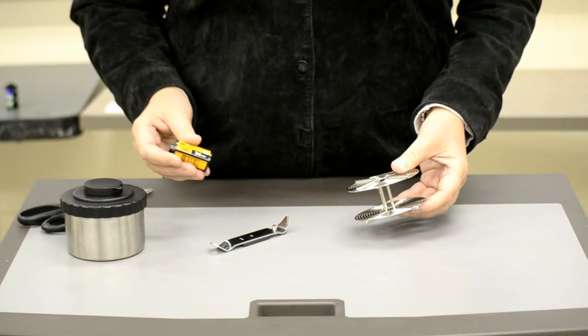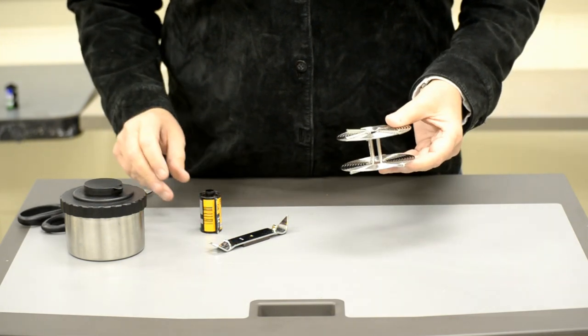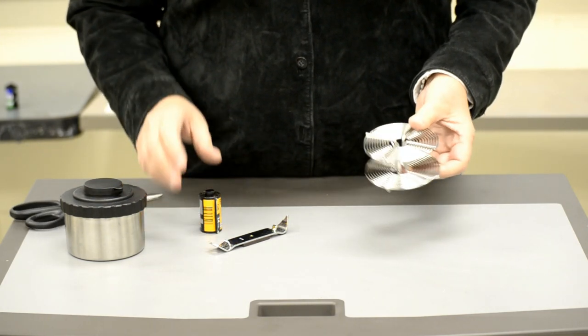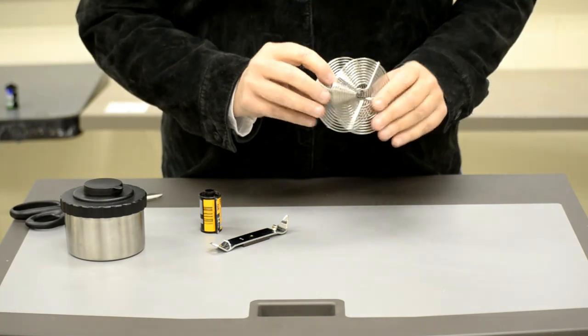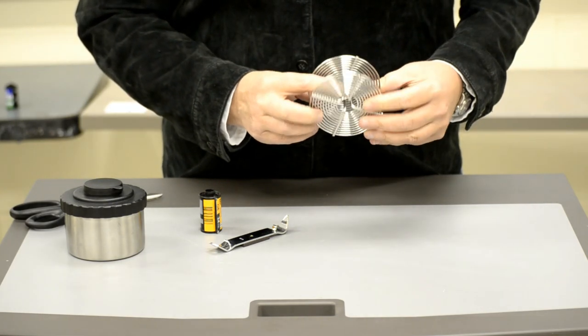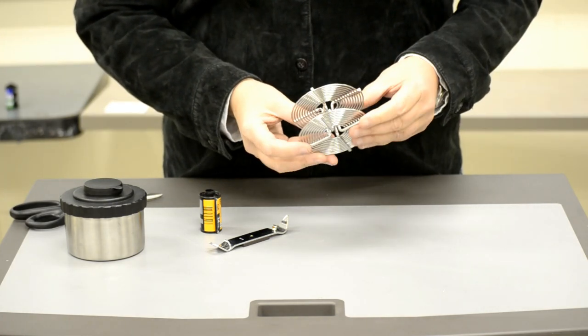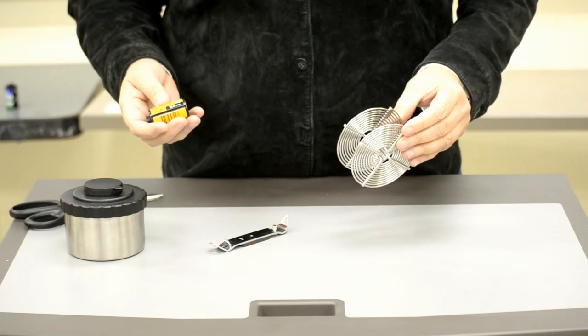So today I'm going to show you how to load film onto a stainless steel reel, specifically a Hughes stainless steel reel, and this is for developing your own film in the dark room.